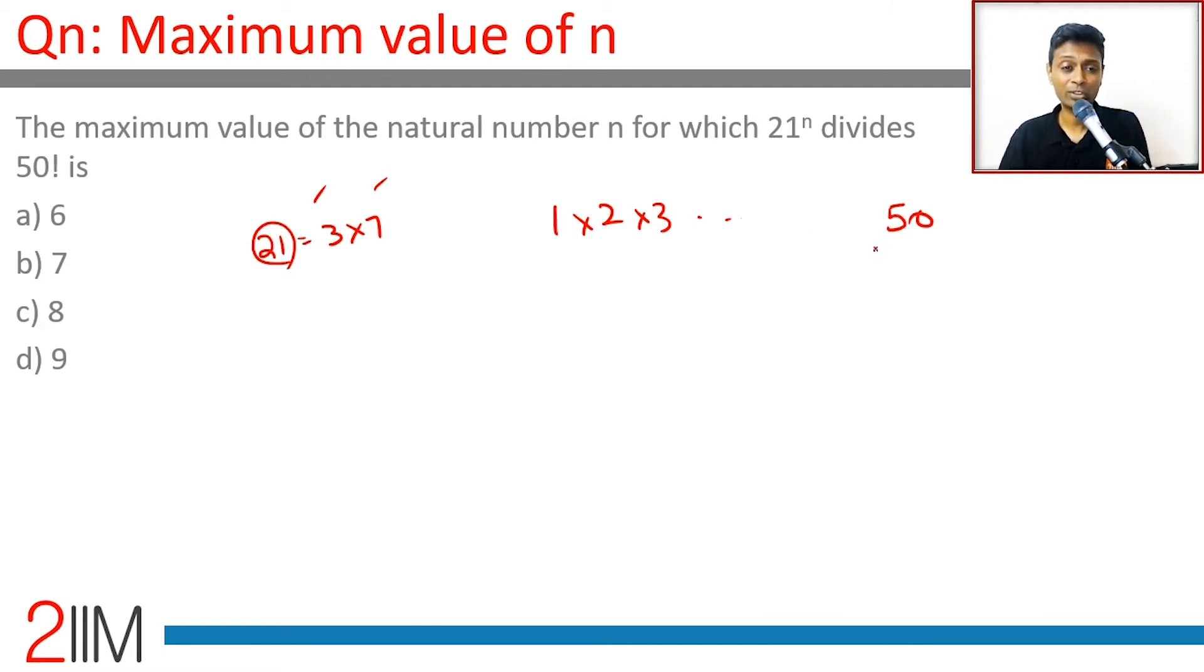Remember there are way more 3s than 7s. So the question effectively becomes: what is the highest power of 7 that divides 50 factorial?